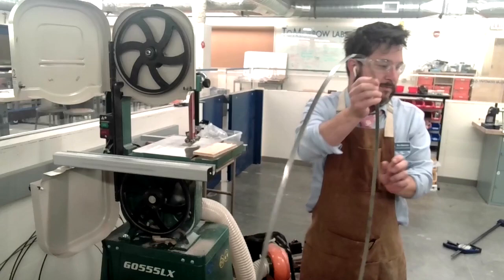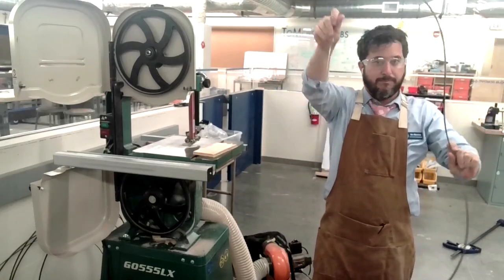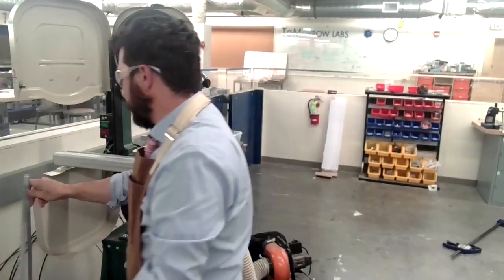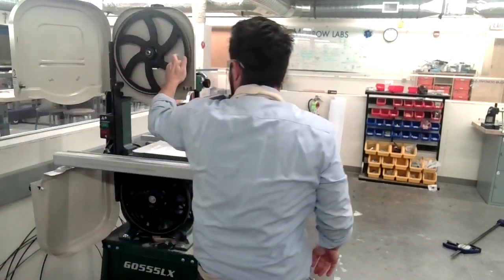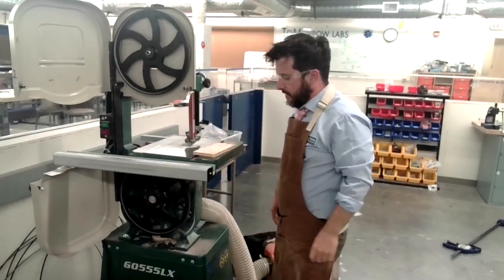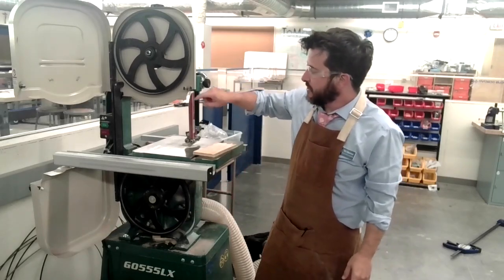So this is a bandsaw blade. It looks like a big band, like a rubber band. So the band goes around these two wheels here. So as it moves, you can cut material. There's a motor down here that actually powers it, and this just tracks along. There's bearings and everything else that you need to have set up properly.